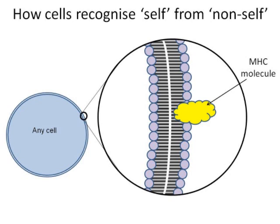We've got an MHC molecule sitting on the surface of the plasma membrane. All of your cells have the same MHC molecules on them, and that is a recognition of you — the cells belong to you. Anything that has not got the MHC molecule on it is regarded as a foreign material and would be attacked by your body.